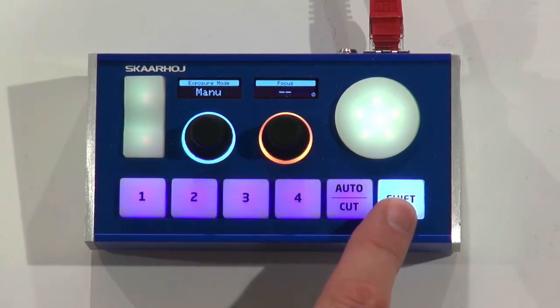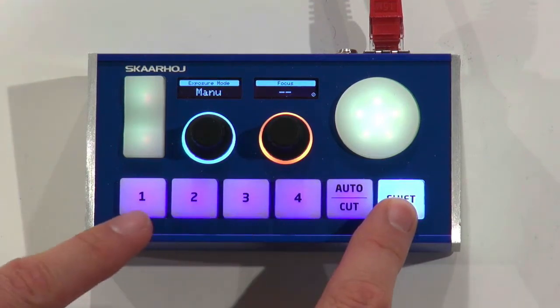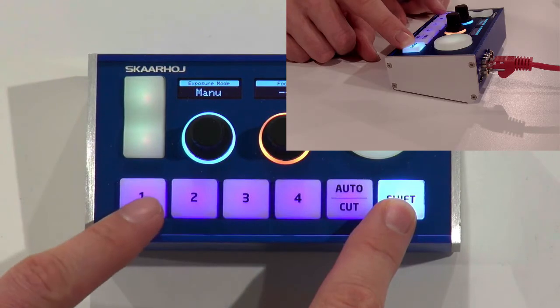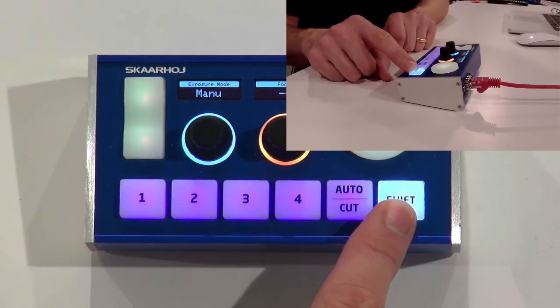Now the shift key, when you press the shift key, you get into a mode where you have access to the presets right here. Now I already put a preset on number one. So when I press one, you see the camera adjust to this preset.